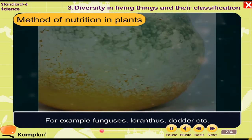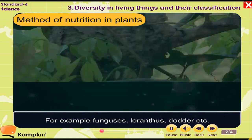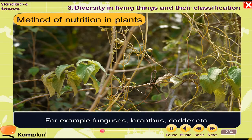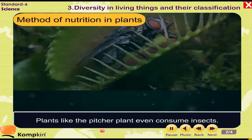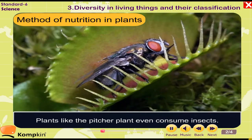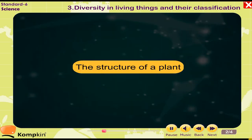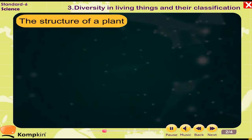For example, funguses, loranthus, dodder, etc. Plants like the pitcher plant even consume insects. They are insectivorous.